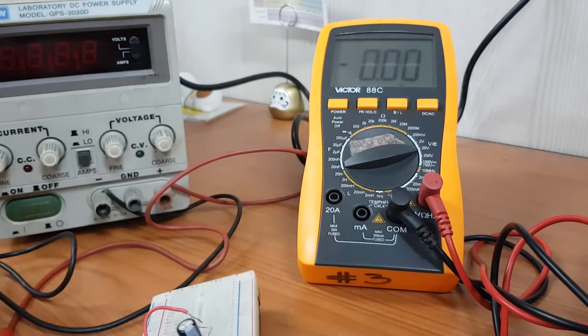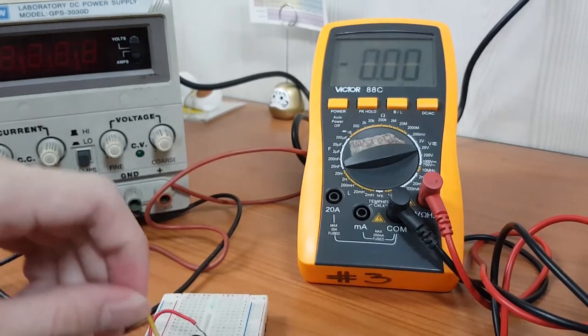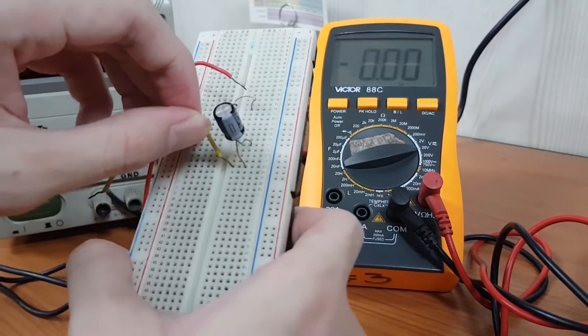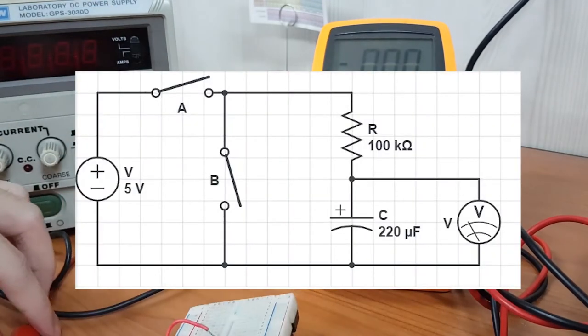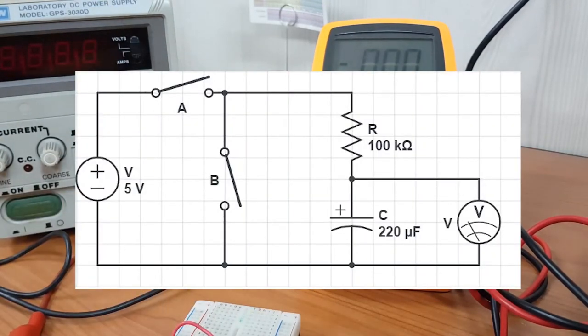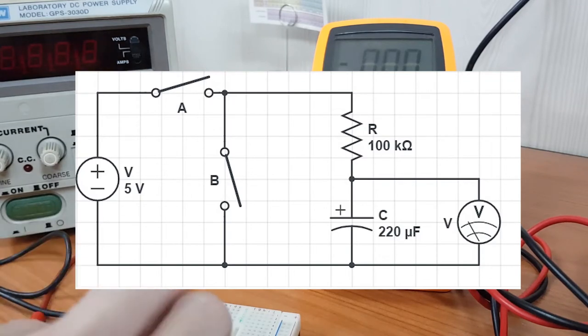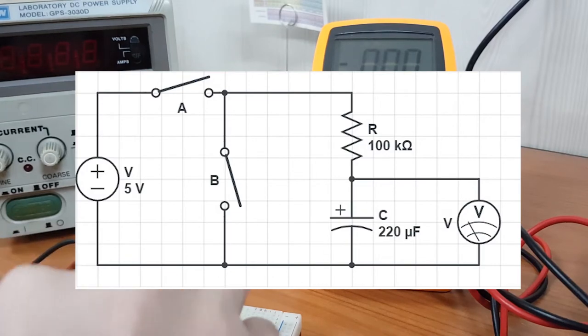Then we set up our circuit diagram in our breadboard. This yellow wire here will act as the ground and later as switch B while the topmost red wire will act as the A switch.